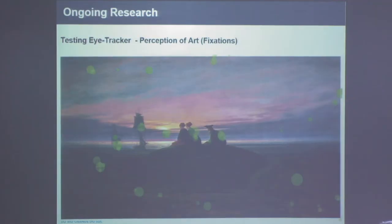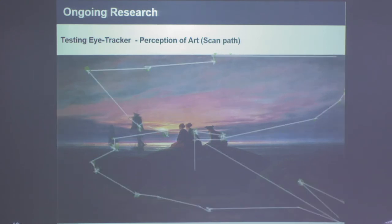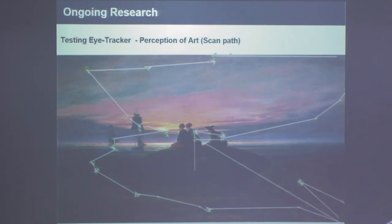This happens involuntarily all the time, and that's how our system works to analyze gaze. The first image shows the same piece of art, and the green dots represent fixations. The size of the circles indicates how long the subject spent looking at each point. The next image shows the scan path — arrows going from fixation to fixation represent the saccades.